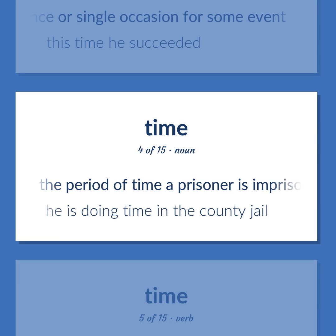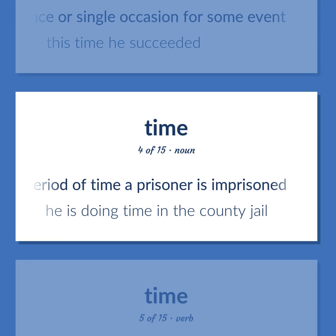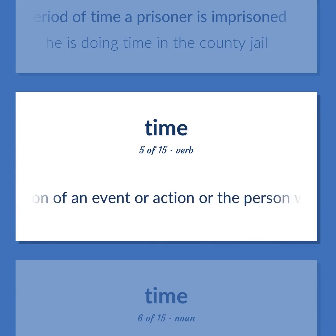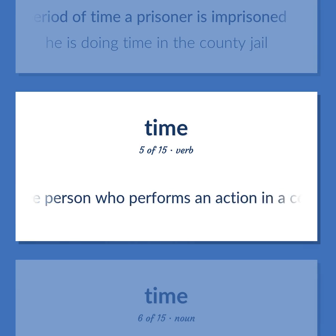TIME: The period of time a prisoner is imprisoned. He is doing time in the county jail. Measure the time or duration of an event or action, or the person who performs an action in a certain period of time.